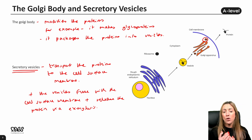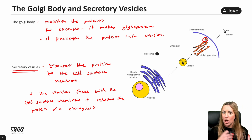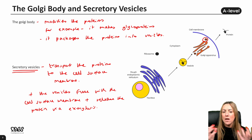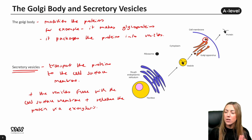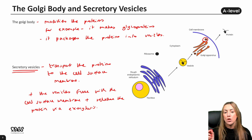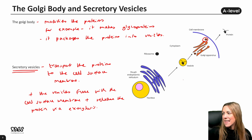So we've gone all the way through: the nucleus has the DNA which is the code for the protein; the ribosomes and the rough ER synthesize the proteins; the Golgi body modifies the protein and packages it into a vesicle; and the vesicle transports that protein to the cell surface membrane.